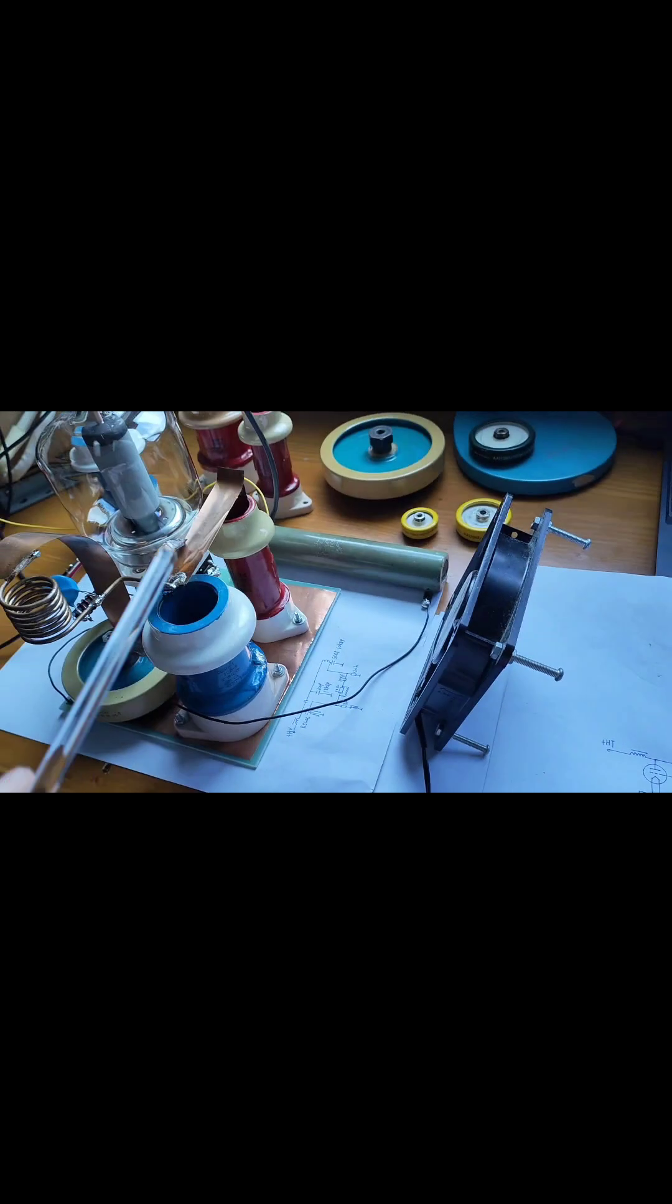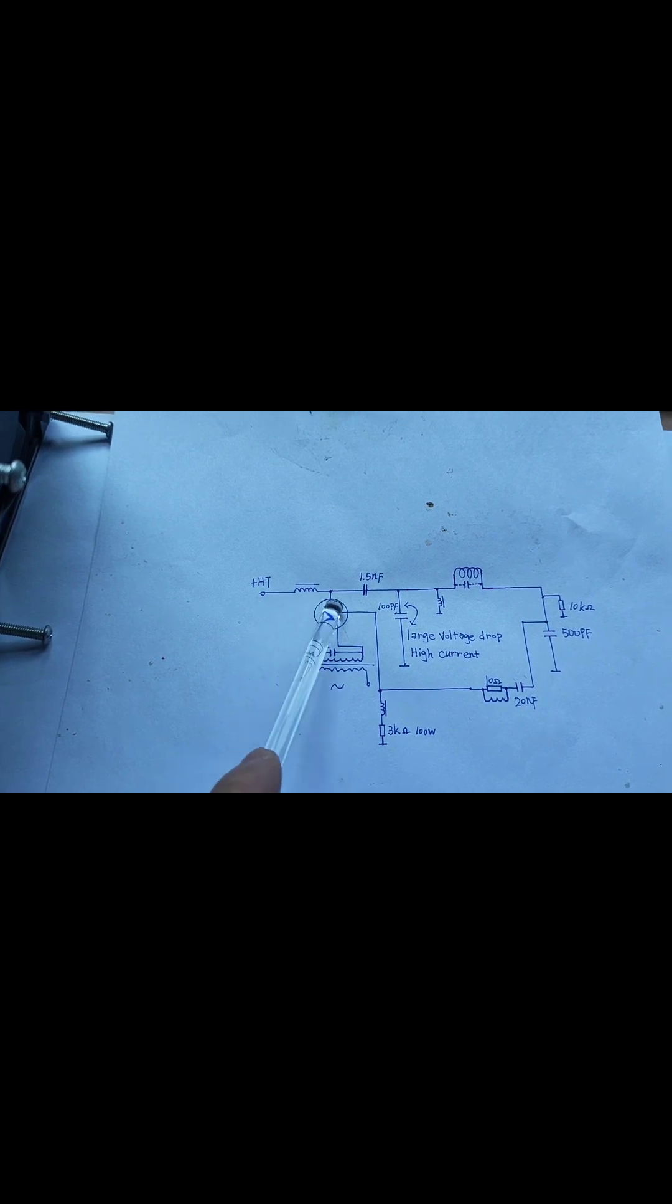And the most importantly, the trails of the vacuum tube. Here I am using the Siemens RS1026 trail, which is over there. And as far as I know, by using a trail, you will make the circuit much simpler. Because you can eliminate the screen grid supply.